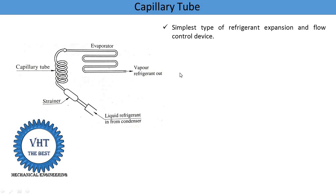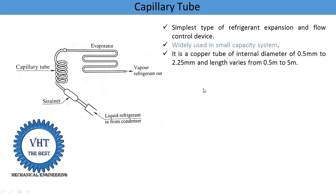This capillary tube is the simplest type of refrigerant expansion device, or flow control device. It is generally constructed from copper and has a very small diameter and certain length. It is widely used in smaller capacity systems — generally used in freezers, refrigerators, air conditioning systems, and water coolers.